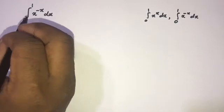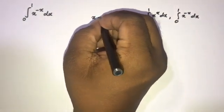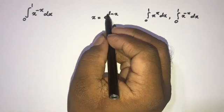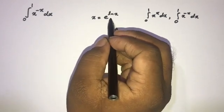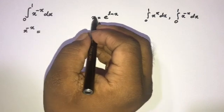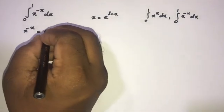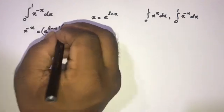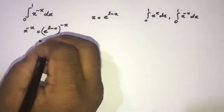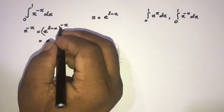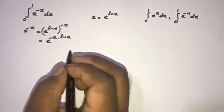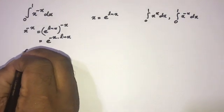Now let's go to the question. First, we know x is equal to e to the natural log of x. Then e and natural log get cancelled, so x equals x. We can write x^(-x) as follows: we plug in e^(ln x) for x, so we can write e to the natural log of x to the minus x, which gives us e to the power of minus x times natural log of x.